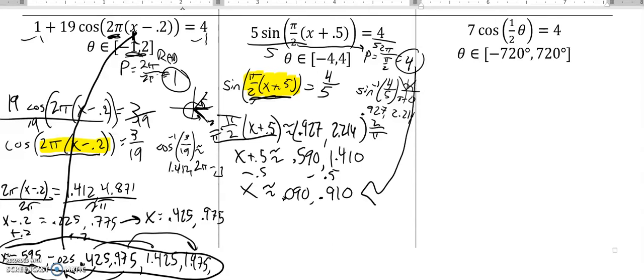I notice that my period is 4, so 0.090 and 0.910. If I add 4 to each of these, I'll be past 4, so I don't need to worry about that end.